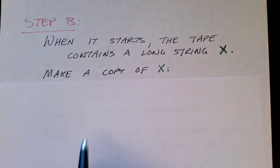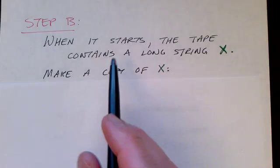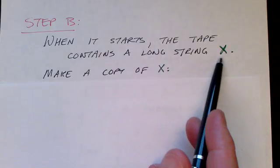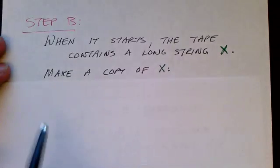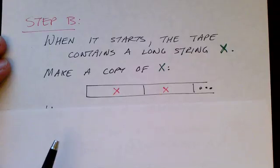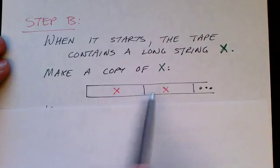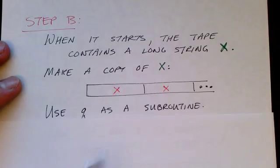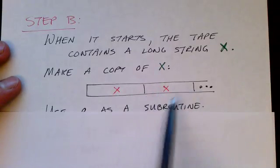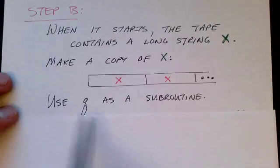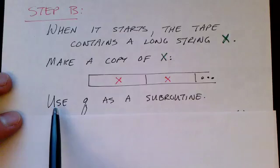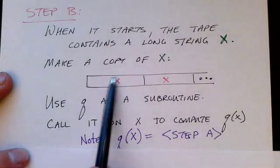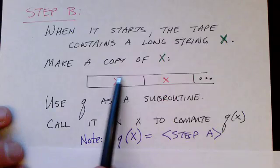Let's look at step B. When step B begins running, after step A is finished, the tape will contain the long string of symbols we've called X. The first thing that step B does is make a copy of X — we know we can write a Turing machine that will copy a string — so now the tape looks like X and X. We can also shift X around if we need more room.